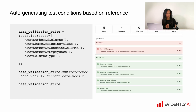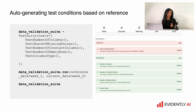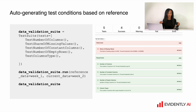There are quite a lot of ways how you can get auto-generated test conditions based on the reference. Evidently has very nice algorithms which allow you to do that. For doing reference-based test conditions, you just need to create your good reference data and pass it to Evidently. But be careful, because if you do not work on test conditions manually, then you need to invest some time into curating and creating a right, representative reference dataset. In this case, it's as important as the test conditions themselves.